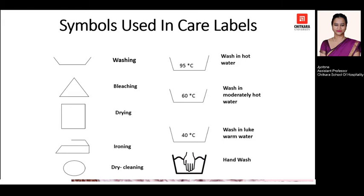Let's have a look at these symbols, which you will see on all tags used in India. The first symbol, in the shape of a tub, means washing — if any garment has this tag, you simply have to wash it. If it is a triangle, this means bleaching is required. A square or rectangle shape means drying. The iron shape is very simple to identify — it means ironing. If it has a circle, it means the garment has to be dry cleaned. These five basic symbols are what you need to understand.